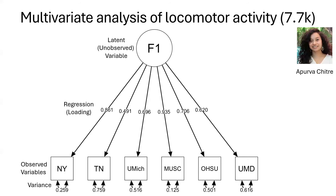In the bottom, those are our locomotor activity logged in each of our different centers. Then we have the loading of those observed variables onto our latent unobserved variable, which is our generalized locomotor activity trait.